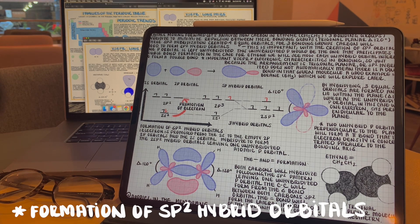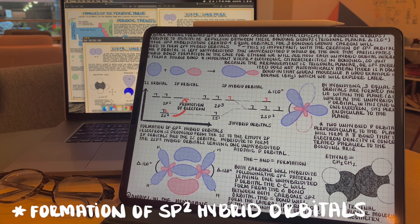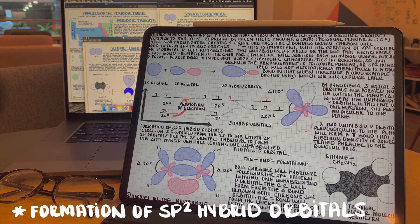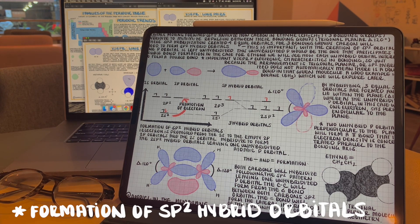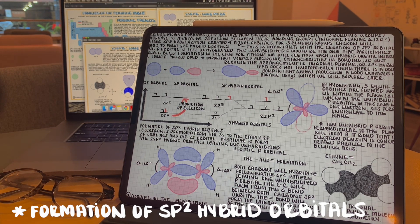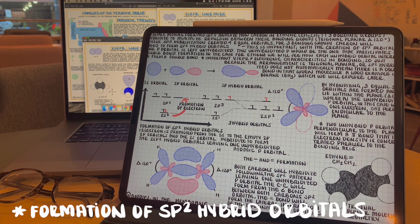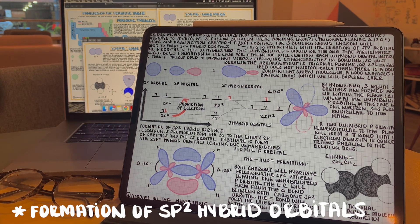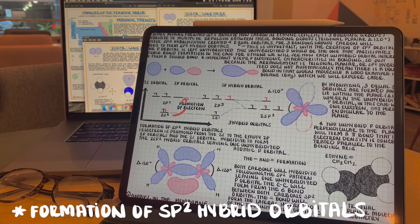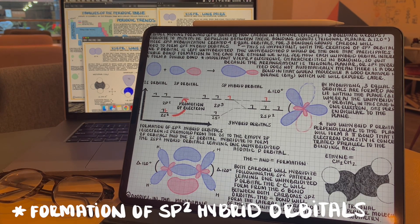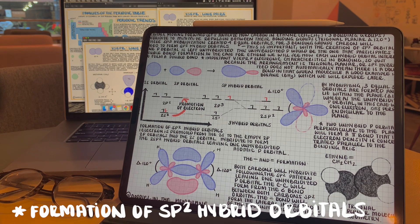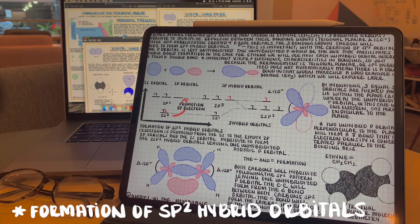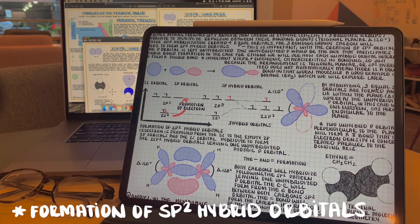Just as before, we will see a promotion of one electron into the empty p orbital, creating four atomic orbitals with one electron each. They're energetically unequivalent. Since we only need three equal orbitals, we will only merge three of the orbitals, creating three energetically equivalent hybrid orbitals. This is what we call sp2 hybridization, leaving one unhybridized p orbital with one electron. The three sp2 hybrid orbitals are positioned in the trigonal planar 120 degree arrangement, containing one perpendicular unhybridized p orbital.